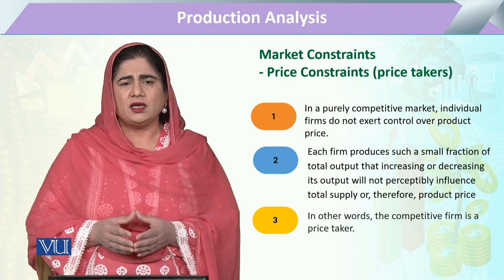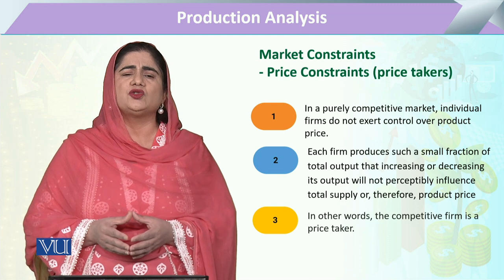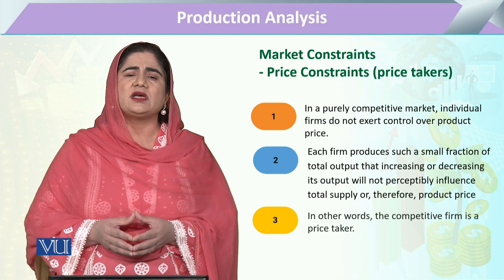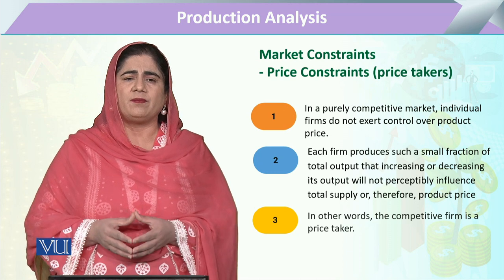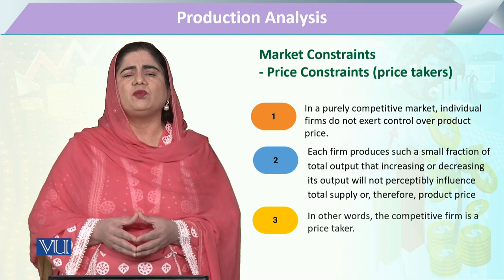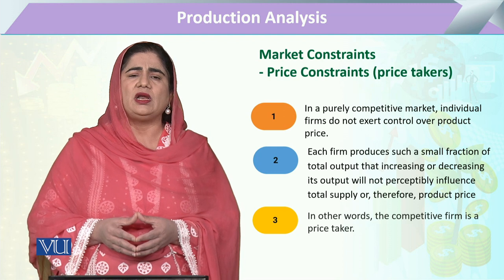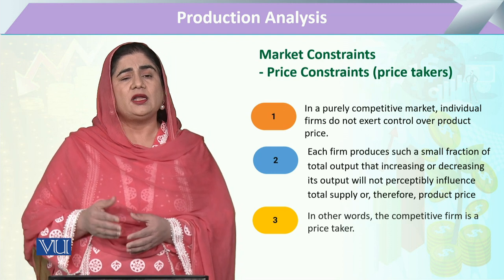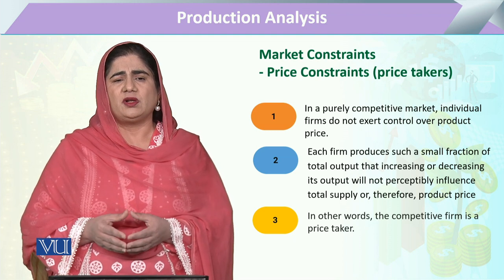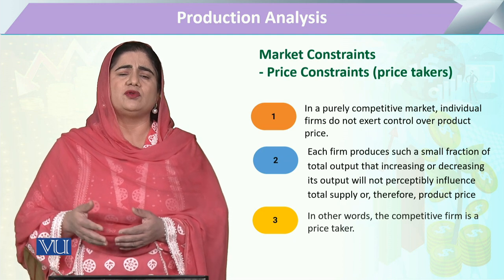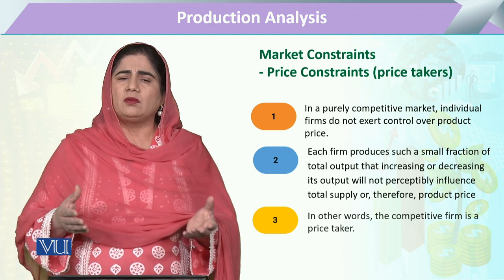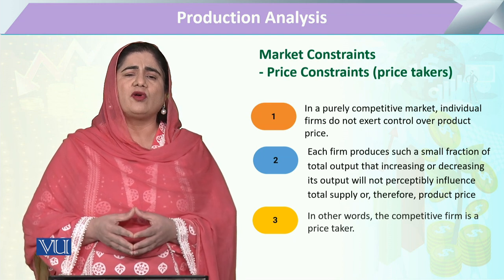The market creates a certain situation for the firm where we say the firm is always a price taker — a price taker even for inputs, because whatever input prices are prevailing in the market, he has to purchase at those prices. He is also a price taker in relation to his output, because it is not possible for any entrepreneur or producer to decide on their own what price to offer for their output in the market.